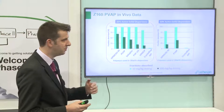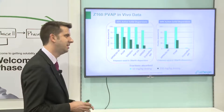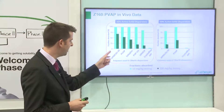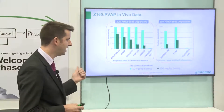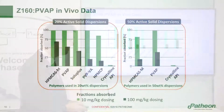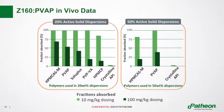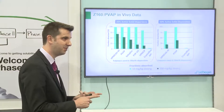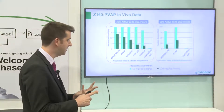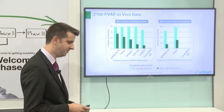This answers the question: what's more important, the spring or the parachute? The answer is the parachute effect — the prolonged exposure is leading to really high fraction absorbed. On the right we have the 50% active solid dispersion and again we're getting great exposure compared to the crystalline API. We've demonstrated we can make a solid dispersion of this API at high concentration, that it's stable over time, gives great dissolution, and more importantly gives great data in vivo.